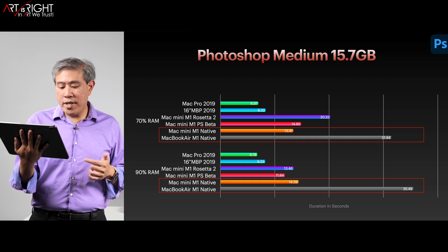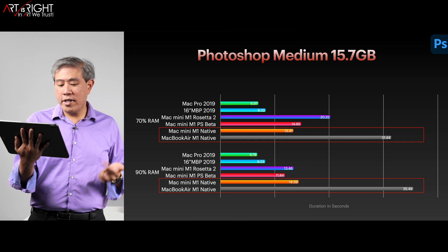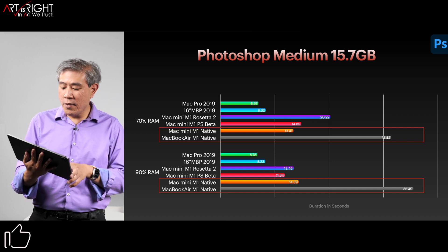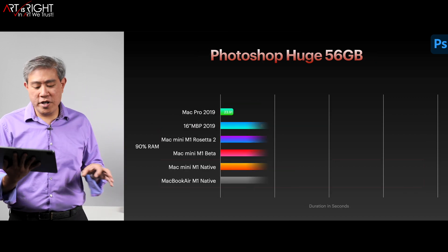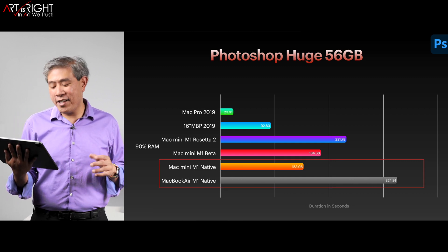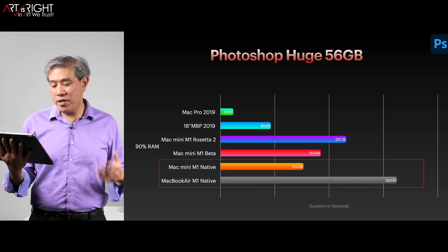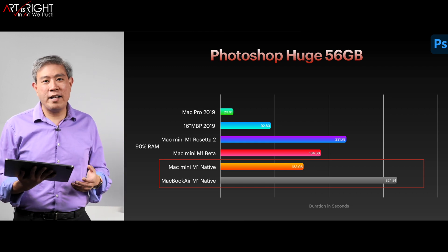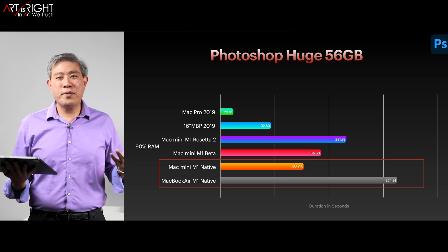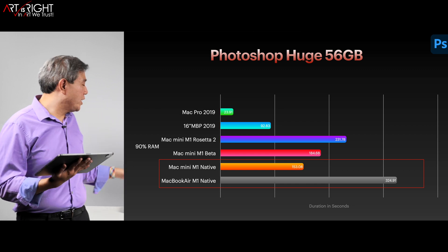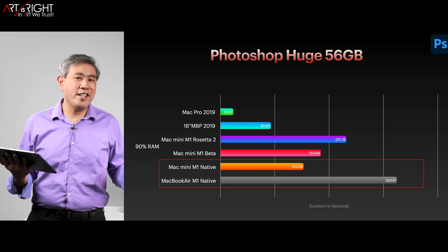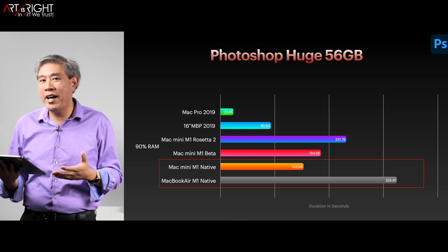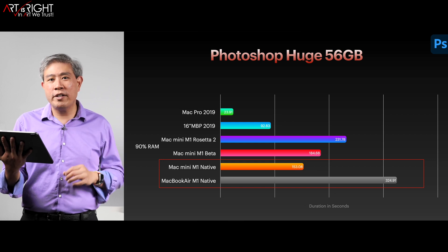For some reason on the M1 processor, it takes longer when bumping up the RAM when dealing with larger files. The last test is Photoshop Huge at 56GB. You'll clearly see that the current Intel machines — the Mac Pro and MacBook Pro — because they have more memory, still beat out the M1 at this point. So it really depends on what you're looking to do. This is not a clear winner across all tasks yet, which is something I was really hoping for Apple Silicon to achieve, and I'm sure they will in the future, but as of now it's not a clear winner in everything.